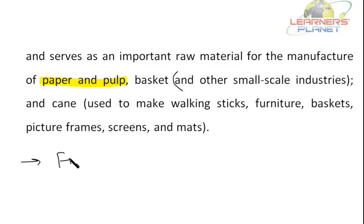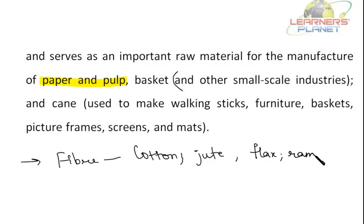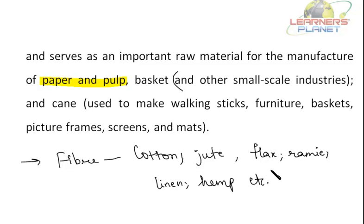We also get fiber from plants such as cotton, jute, flax, ramie, linen and hemp which grow in forests. A forest is home to many types of plants, animals and microorganisms, and these living organisms depend on each other to survive. We will see how all living organisms are interdependent in the forest.